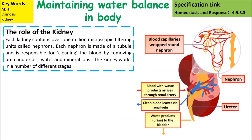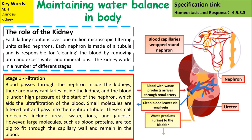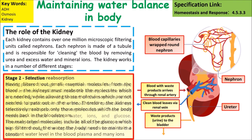Each kidney contains over one million microscopic filtering units called nephrons. Each nephron is made of a tubule and is responsible for cleaning the blood by removing urea and excess water and mineral ions. Stage one is filtration: blood passes through the nephron inside the kidneys under high pressure, so all the smaller molecules such as water are forced into the collecting ducts and move through the kidneys, whereas larger things such as red blood cells cannot pass through.